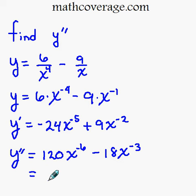So we have 120 over x to the 6th minus 18 over x cubed.